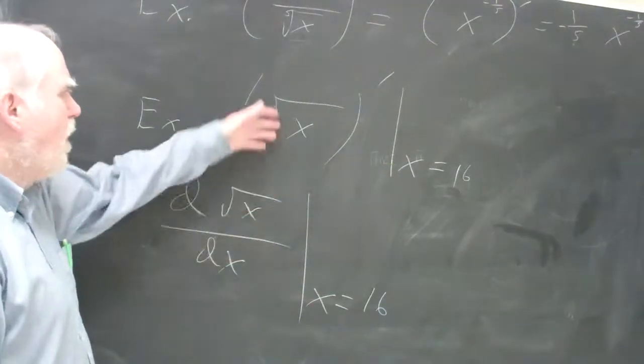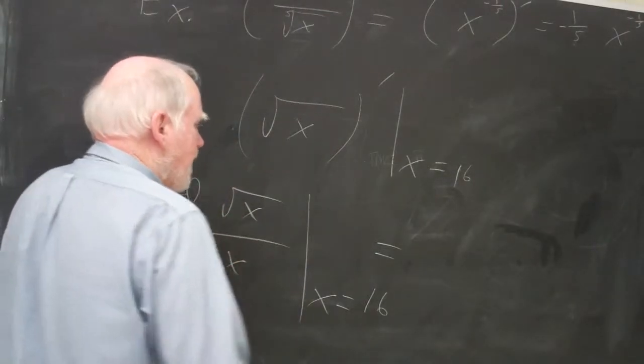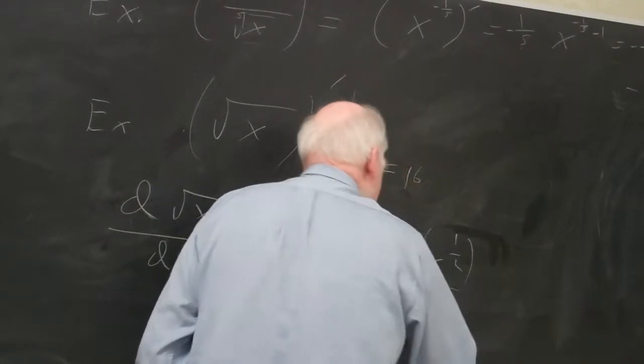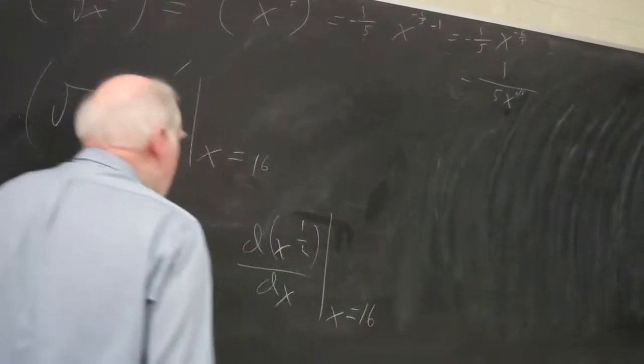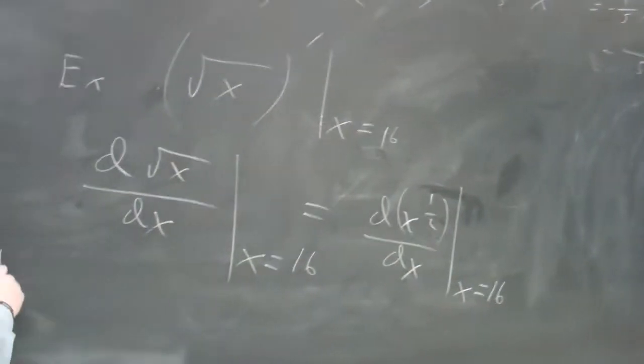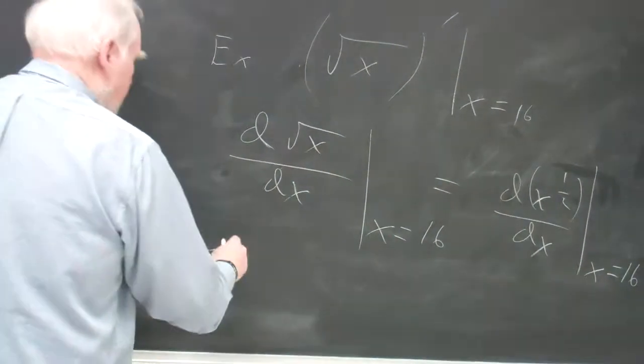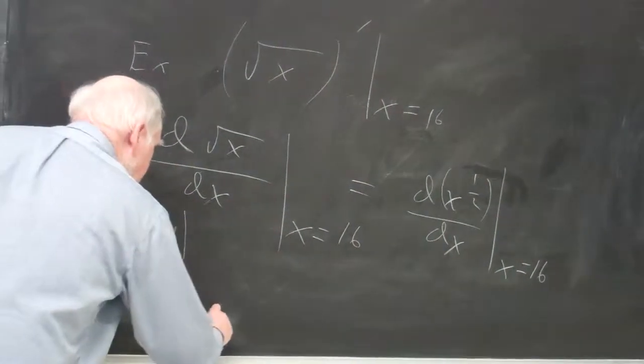I think I'll choose to do it this way. This is actually x to the 1/2 power. 1/2 power with respect to x, and we're going to evaluate it at x equals 16. The derivative of this, I have to bring the 1/2 out, and then I have x to the 1/2 minus 1, and we're evaluating at x equals 16.